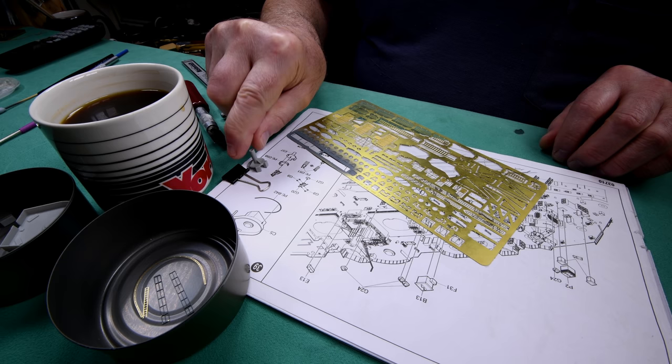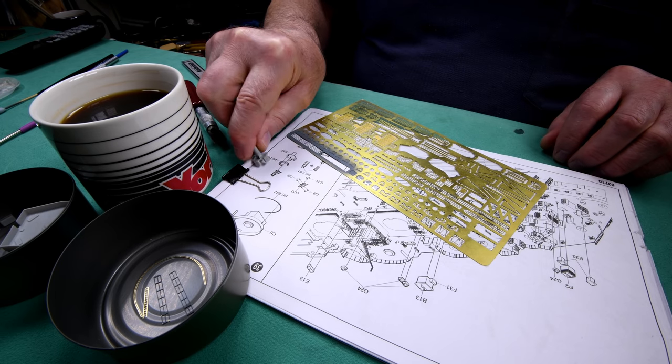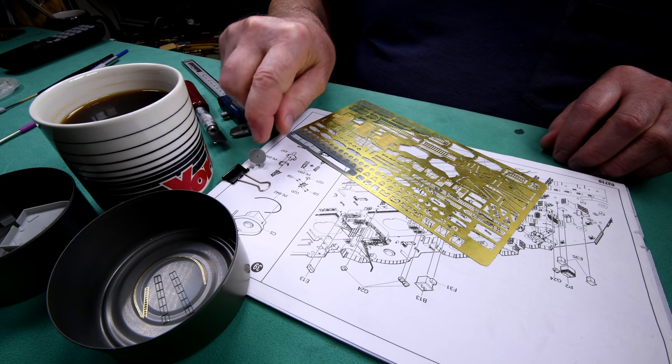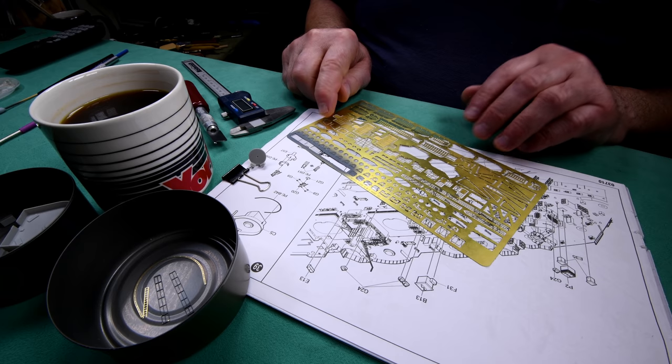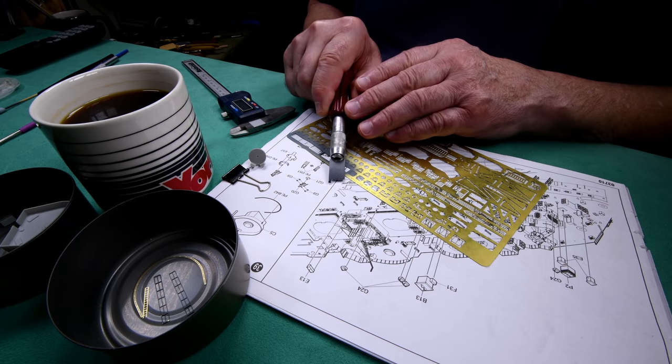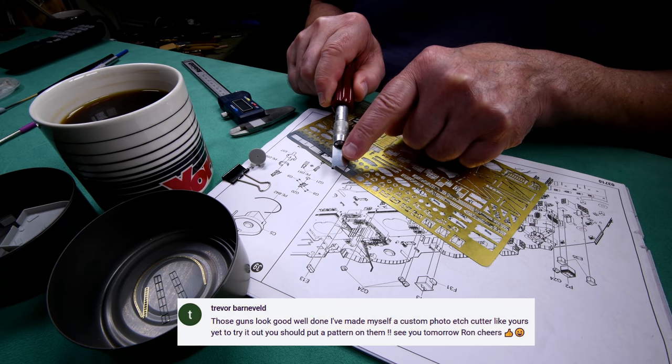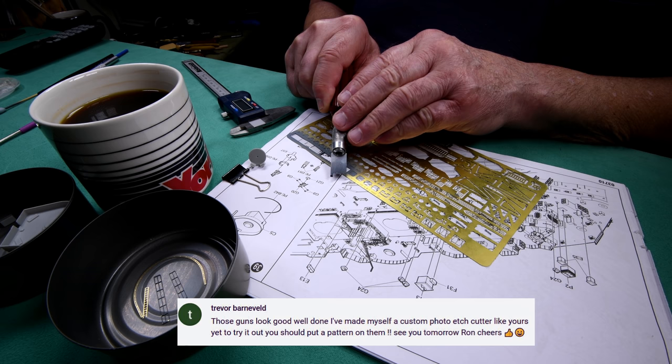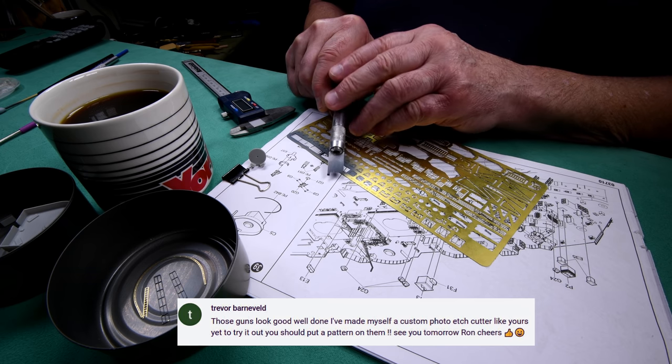In a minute we'll be trying to bend the railing that has to go around this little part right here. What I wanted to mention first, before I forget, is that in the comments from yesterday's video somebody had mentioned that they had made themselves a photo etch cutter similar to what I have here.